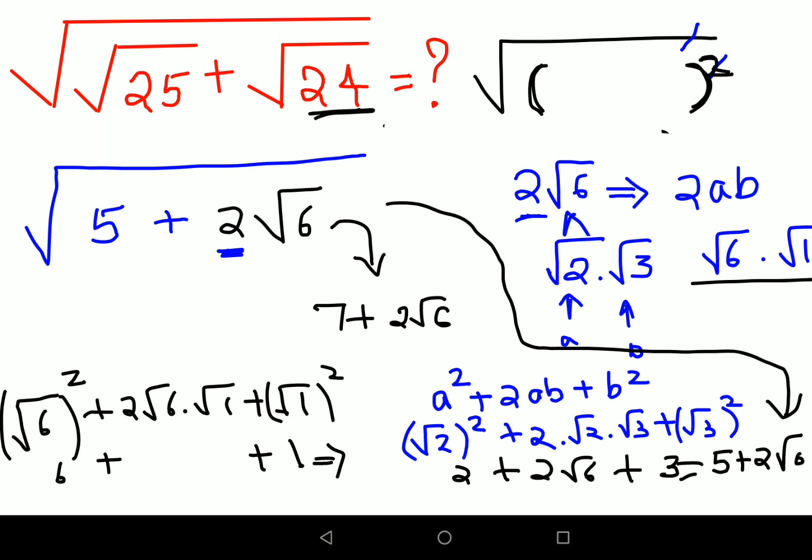But in this particular case you get 2 plus 2 root 6 plus 3. So this eventually comes out to be 5 plus 2 root 6 and that my dear friends is what your question is looking like as of now. So that is why purposely I have chosen these two particular factors because a lot of people think that why did I choose this and then they get confused.